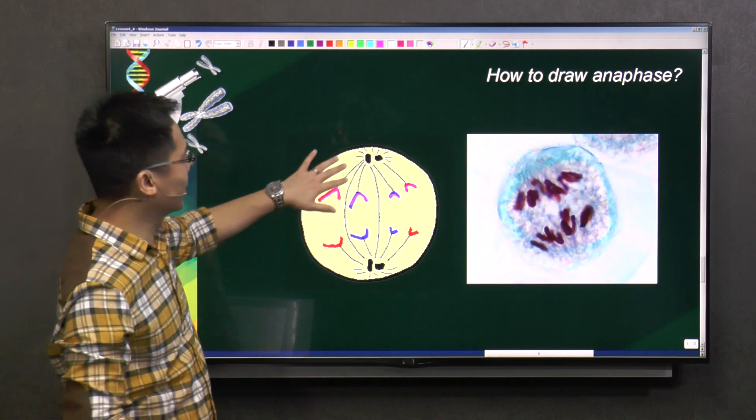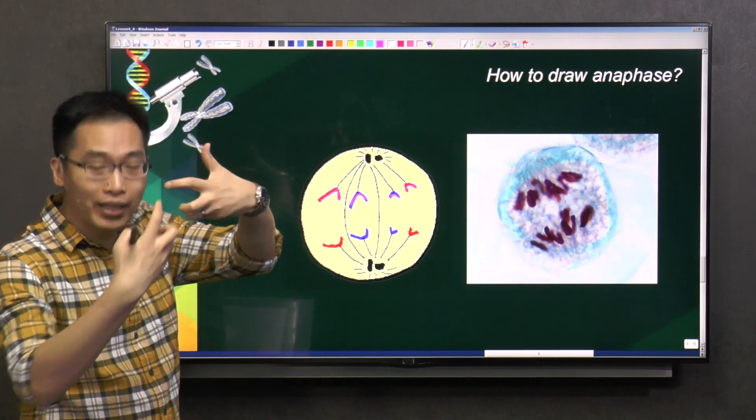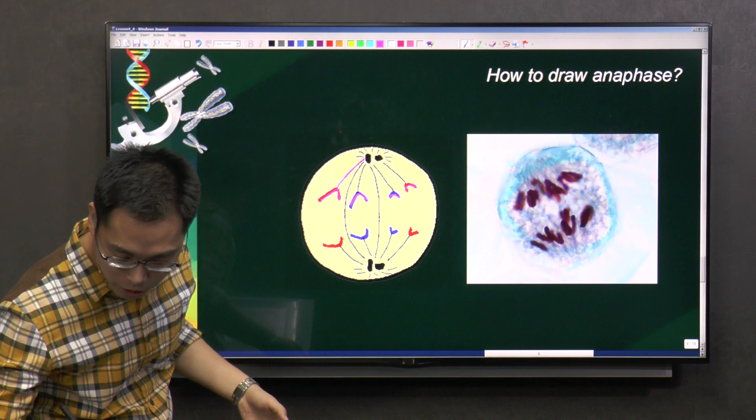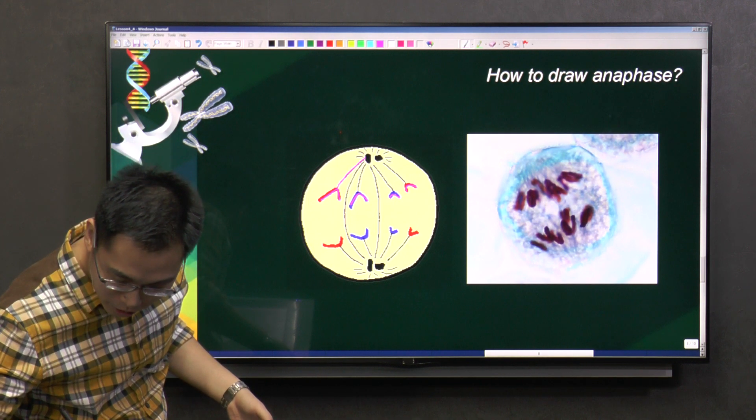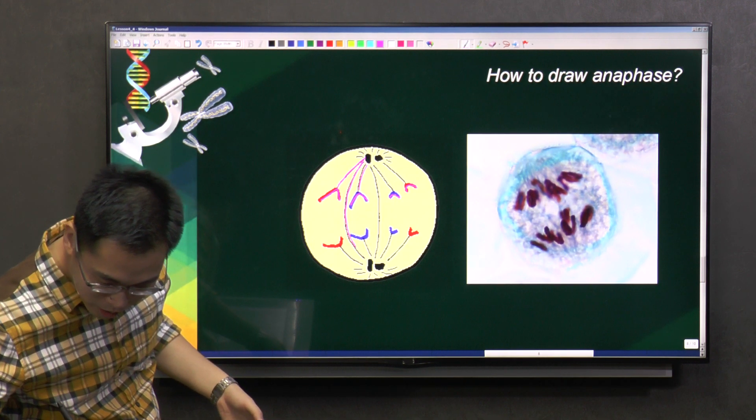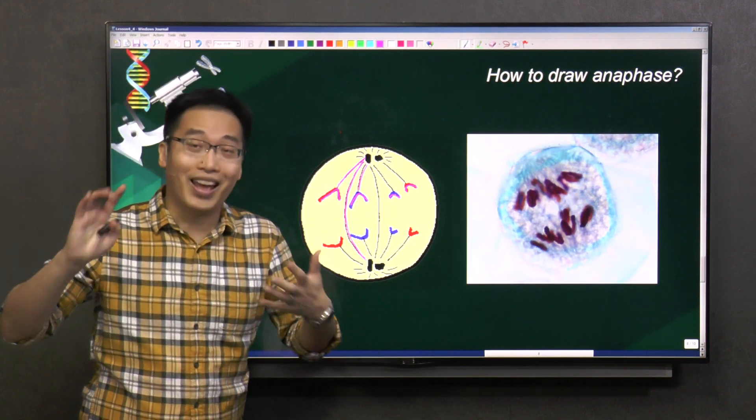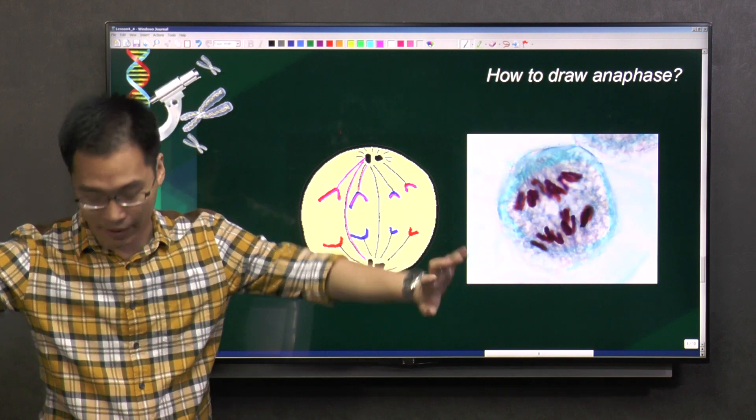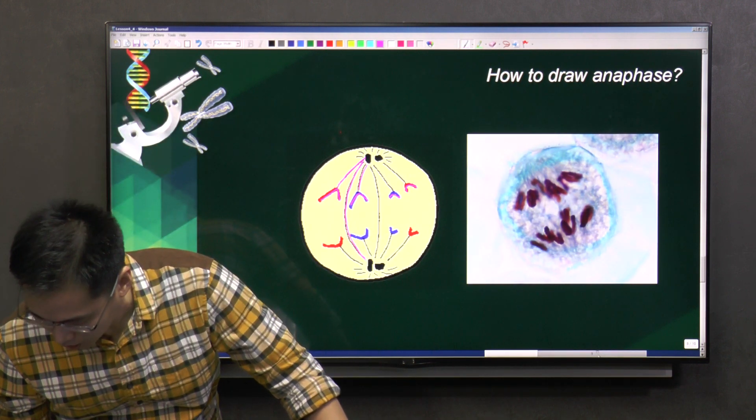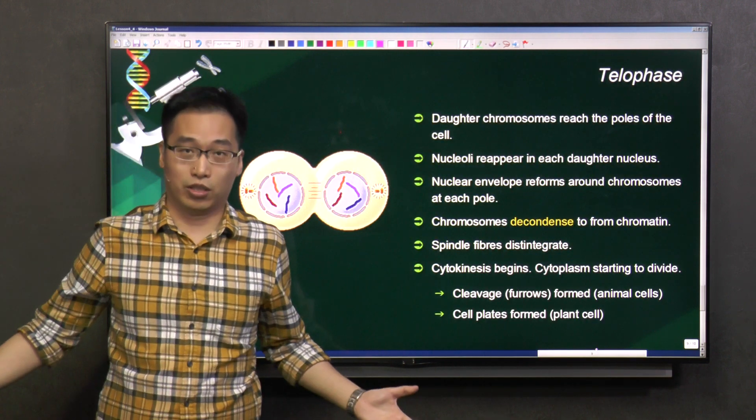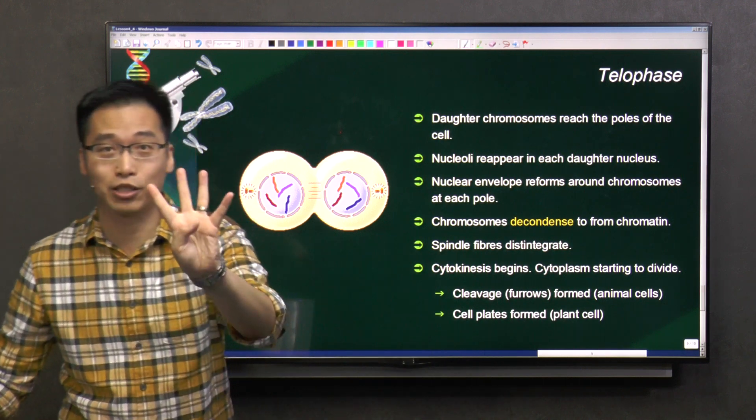They are being pulled apart, so you must have the spindle fibers also pulling them apart. All these pulling them apart. There are of course some spindle fibers that are like that. So all of them are being pulled apart. Anaphase away or apart, that's how I remember it. And the last phase to complete the whole story. Four phases I mentioned.